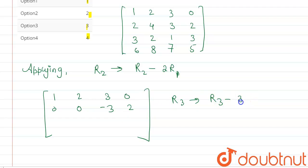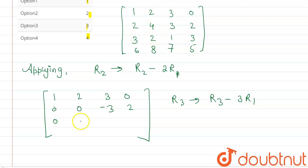Applying R3 → R3 - 3R1: we multiply row 1 by 3 and subtract from row 3. So 3-3=0, 2-6= -4, 1-9= -8, and row 3 becomes [0, -4, -8, 3].